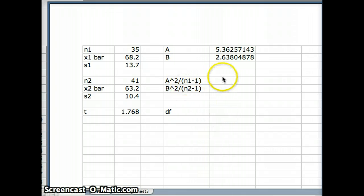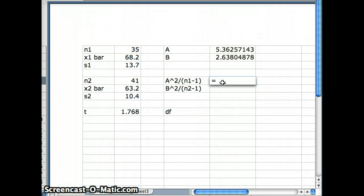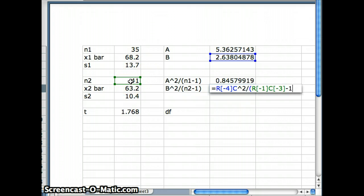So you'll notice I have the headers here, a² over (n₁ - 1). So this will equal a² over n₁ minus 1. And this next one is b² over (n₂ - 1) equals b² over n₂ minus 1. And now we have those values as well.